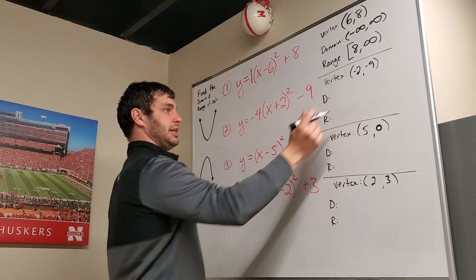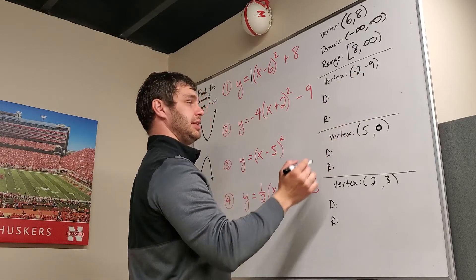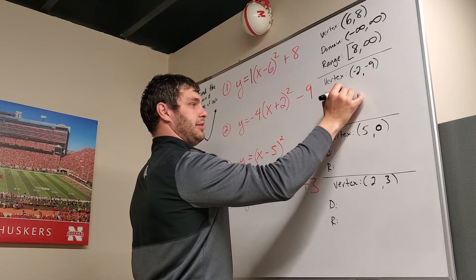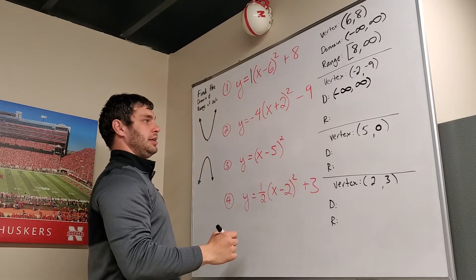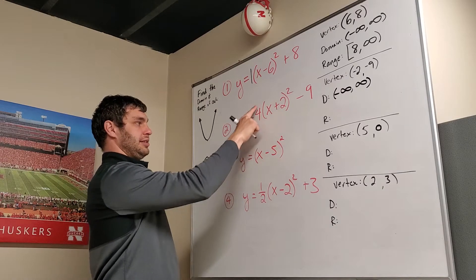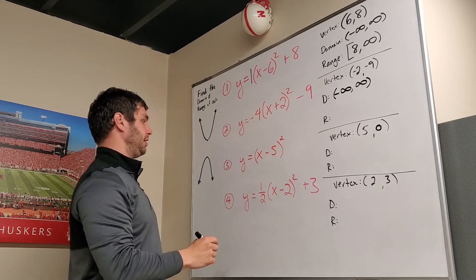The second one, I found the vertex of (-2, -9). It's going to have a domain from negative infinity to positive infinity. The range, however, since this one opens down, it's a negative value.